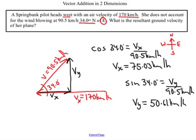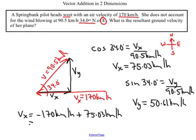My next step will be to add all of my vx components together. So I'm going to write down vx is equal to. And I've got my red vector going off to the left there. So because it's going to the left, I'm going to put negative 170 kilometers per hour. When I'm adding in one dimension, I use negatives and positives to indicate my directions. So negative 170 kilometers per hour plus my other vx is in a positive direction. So that's 75.03 kilometers per hour. So I add those two together and I come up with negative 94.97 kilometers per hour.